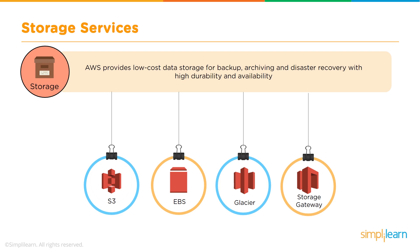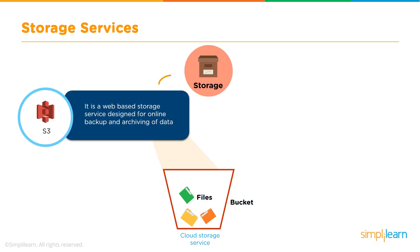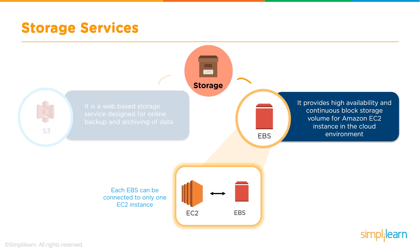Let's talk about storage service. AWS Storage is known for its durability and availability, with S3 being the object storage for the internet where users or applications can directly upload and download content. EBS is a durable block storage that gets attached to the EC2 instance. Glacier is the archival solution in the cloud. S3 provides 11.9 nines of durability, meaning the chances of losing data are nearly zero. EBS provides persistent, resizable, and migratable storage to VMs or EC2 instances running in the cloud.